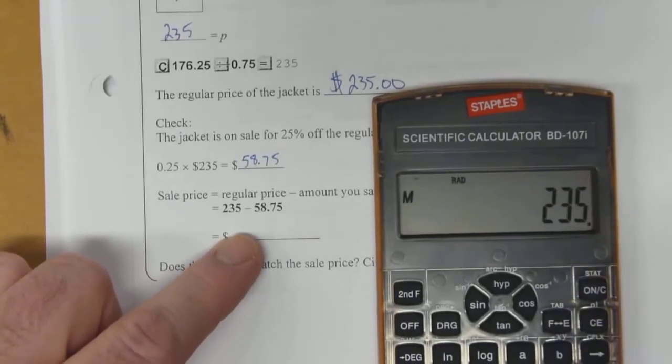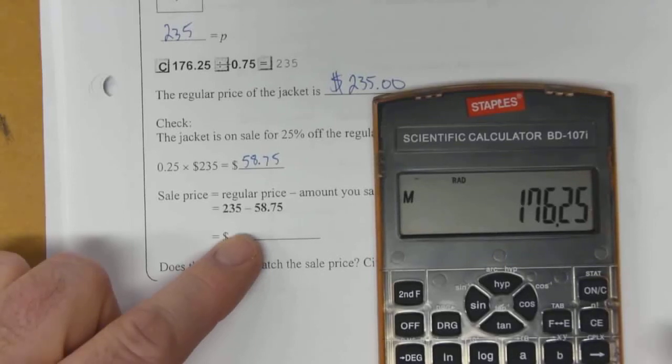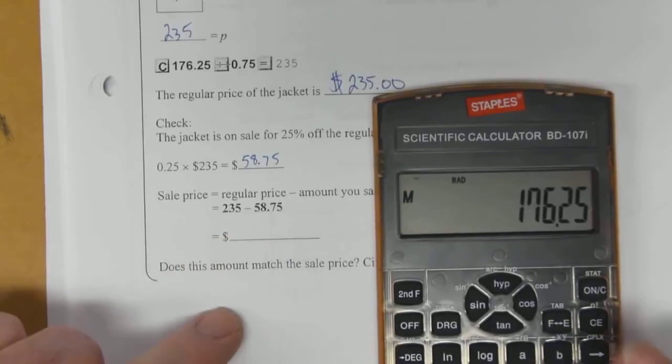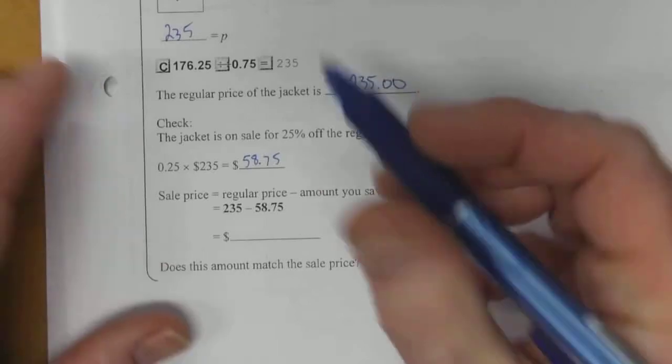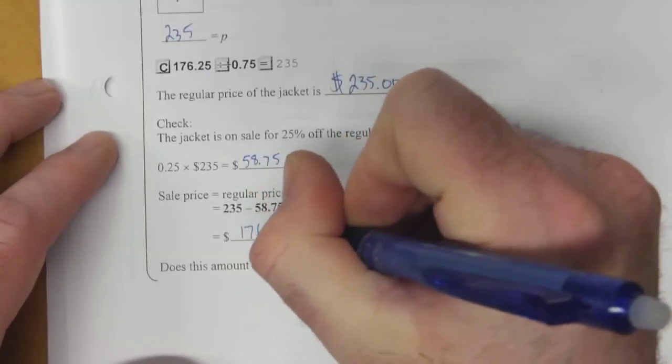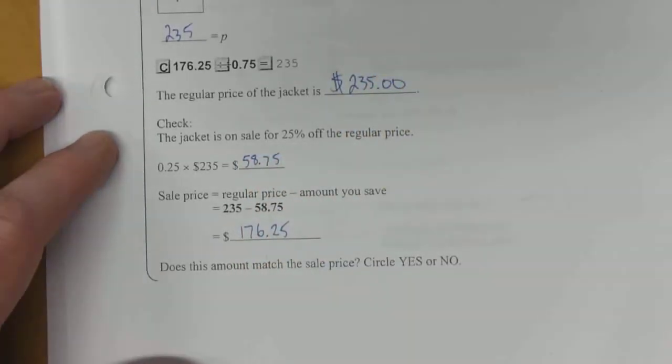$235 subtract $58.75, and $176.25 is your answer. So that's the sale price that we were told in the beginning. That means that our calculation is correct.